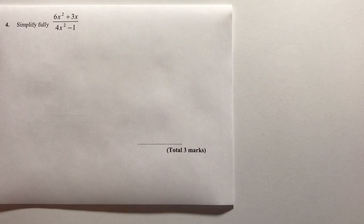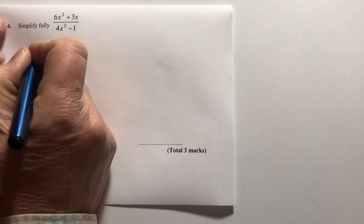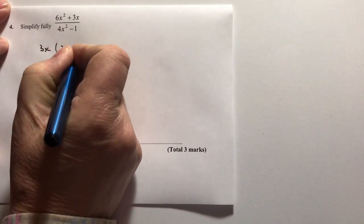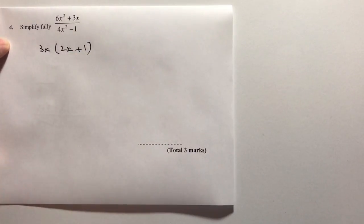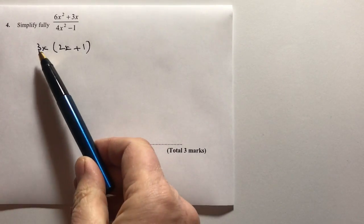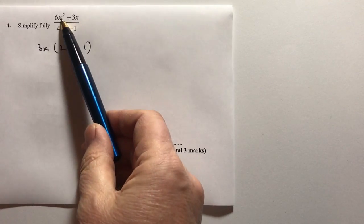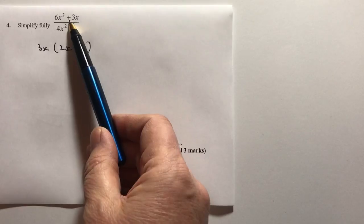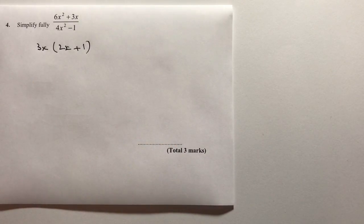I'm going to look at the top and factorize that as 3x multiplied by 2x plus 1 in brackets. What that means is 3x times 2x is 6x squared, and 3x times 1 is plus 3x. So that factorizes the top numerator.